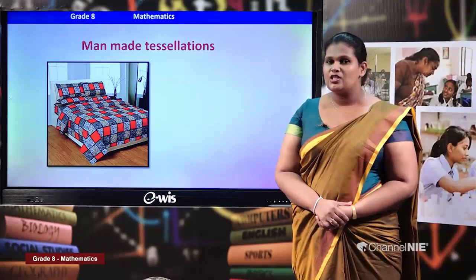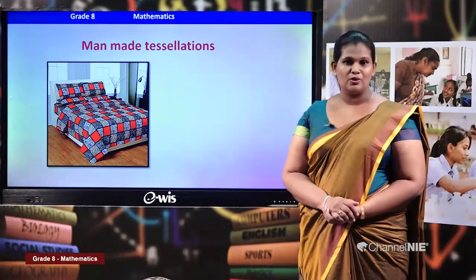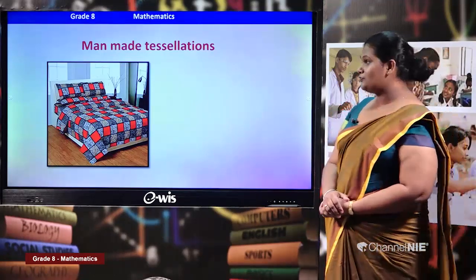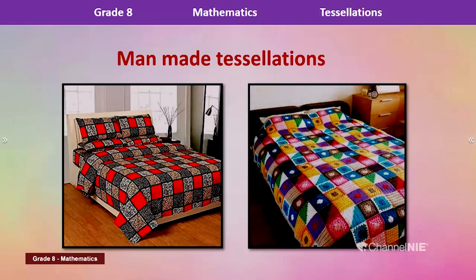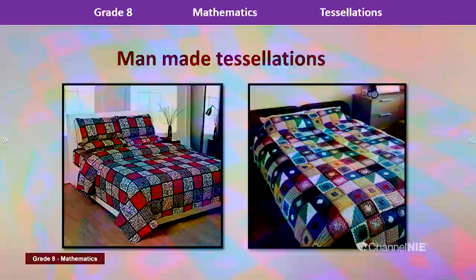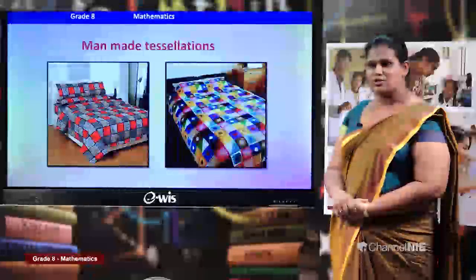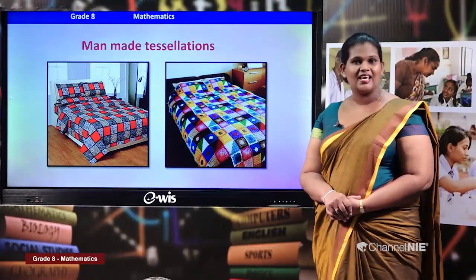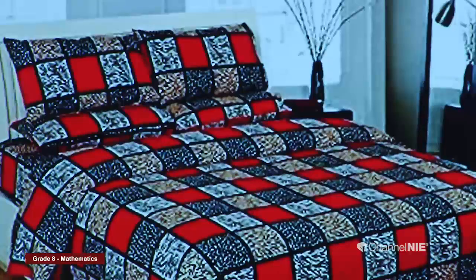These are some of the things you can see in your day-to-day life that are there in nature. Now we'll move on to some man-made tessellations. Have a look at this picture — here you can see two beds with beautiful bed sheets. We can see two types of tessellations using squares. They have used different colors to create beautiful patterns. These are tessellations — they have used the shape of a square.